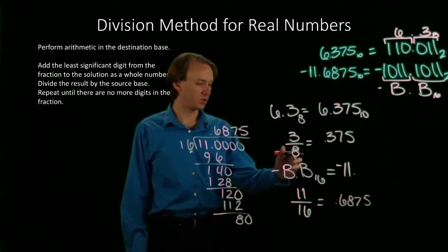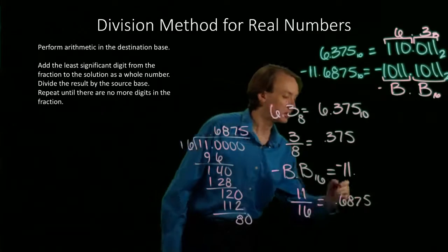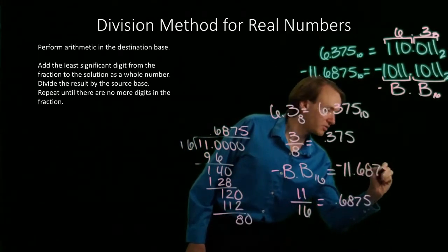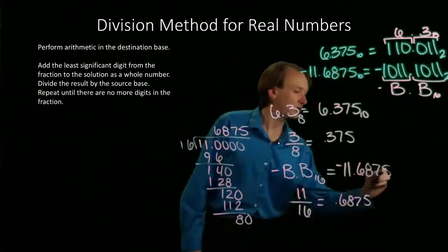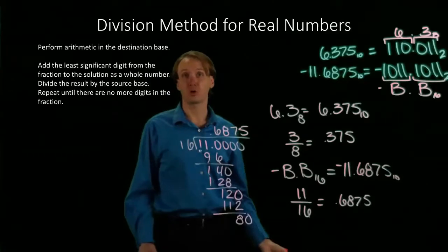So 11 divided by 16 gives me 0.6875. And since there's no more digits in here to pull in, I'm done. I can just copy my 0.6875 into my result. And it turns out that's what we got before as well.